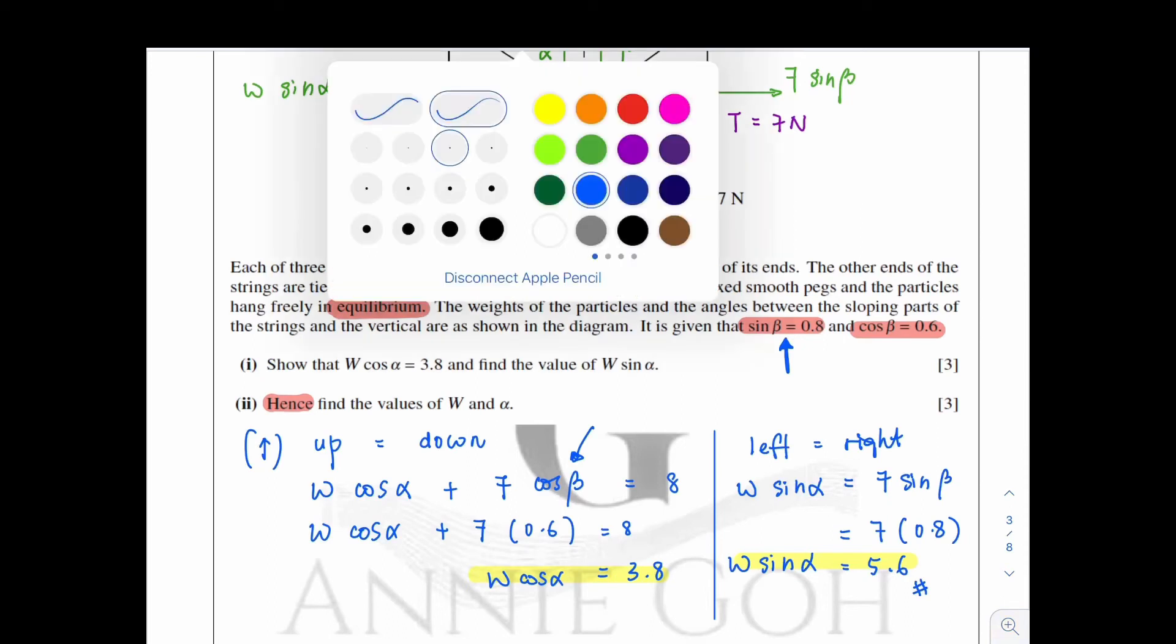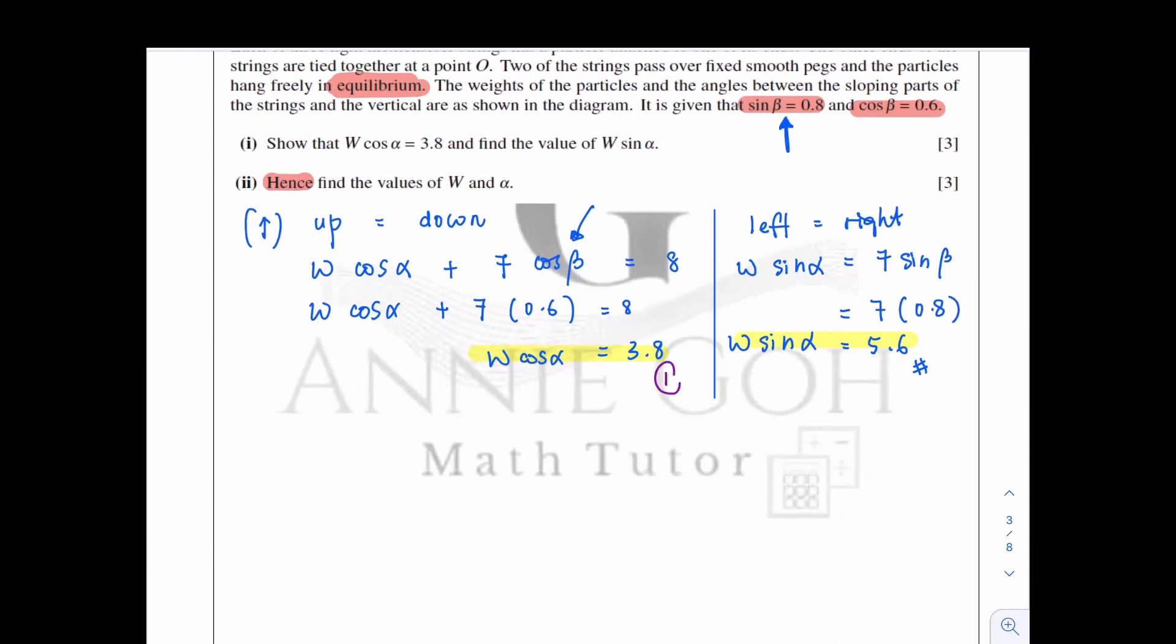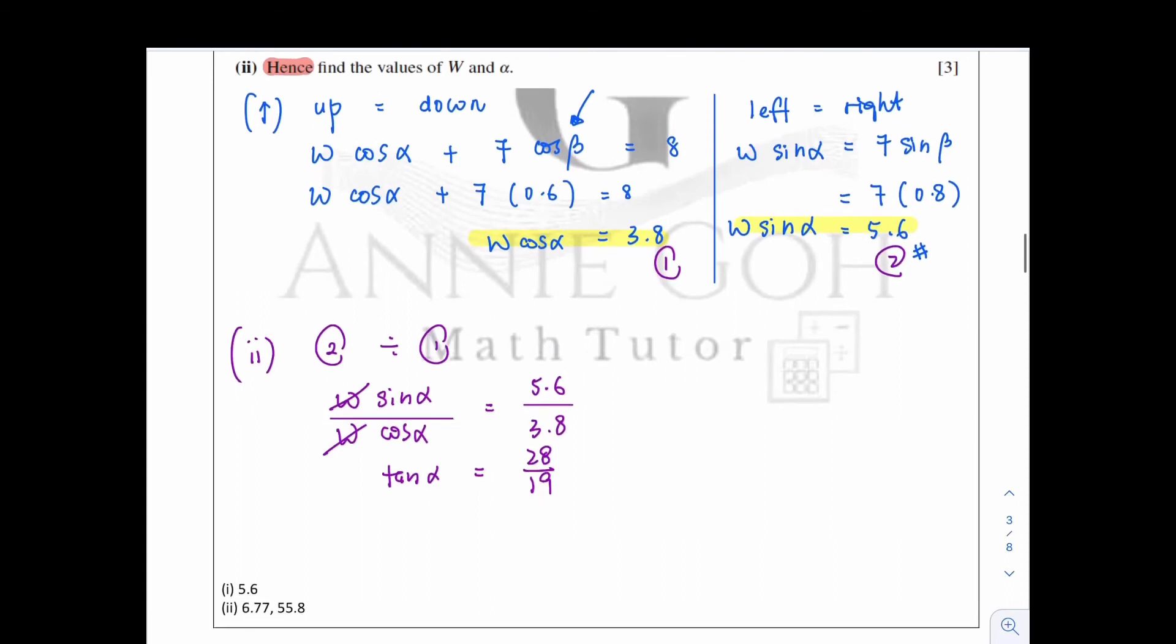So a faster way is, let's say I name this equation as equation 1, this as equation 2. So for part 2, I'll just need to take the second equation divide by the first equation. w sin alpha is divided by w cos alpha, same goes to the value, 5.6 divided by 3.8. So the w here can be cancelled off. And sin alpha over cos alpha will be just tangent alpha. For the right hand side, we will get 28 over 19. And hence, we can get the alpha's angle which is equal to 55.8 degrees. For the angle, the answer should be correct to 1 decimal place.